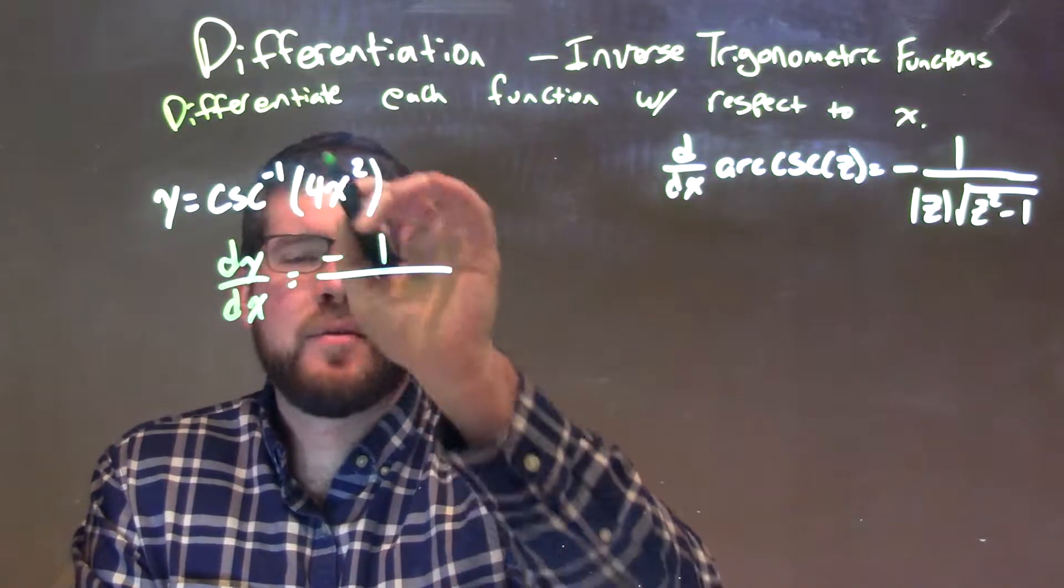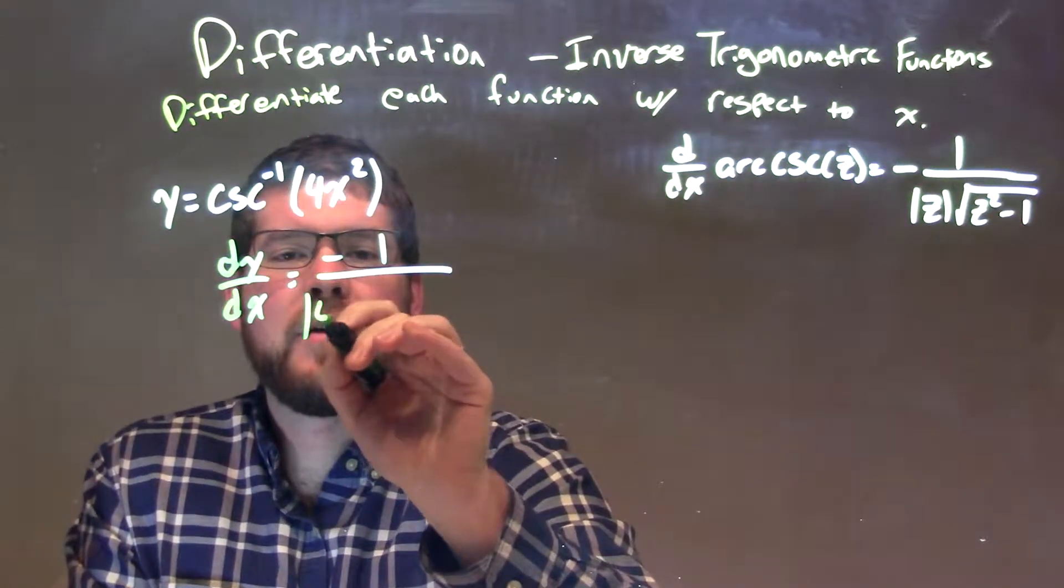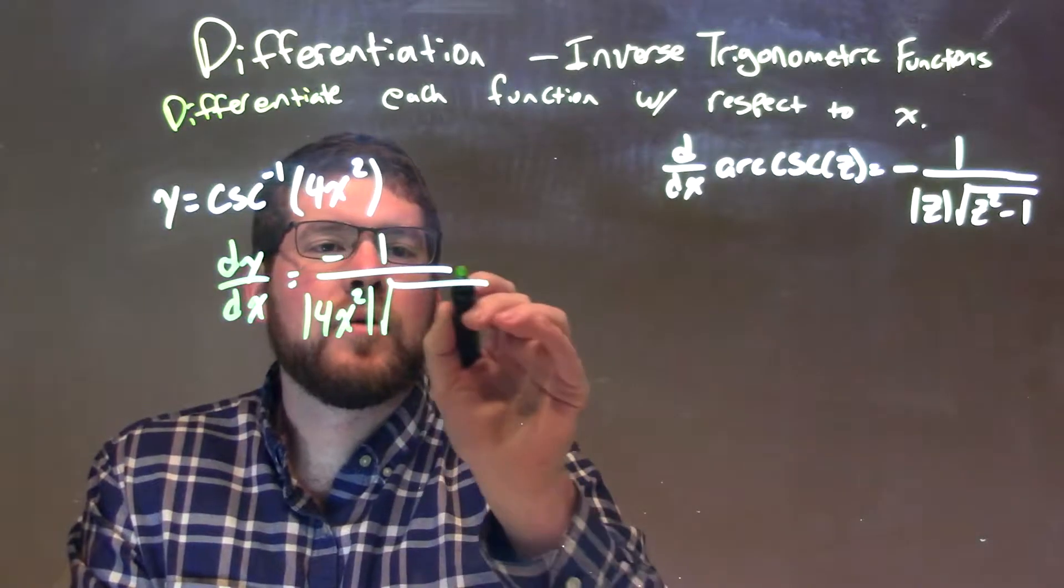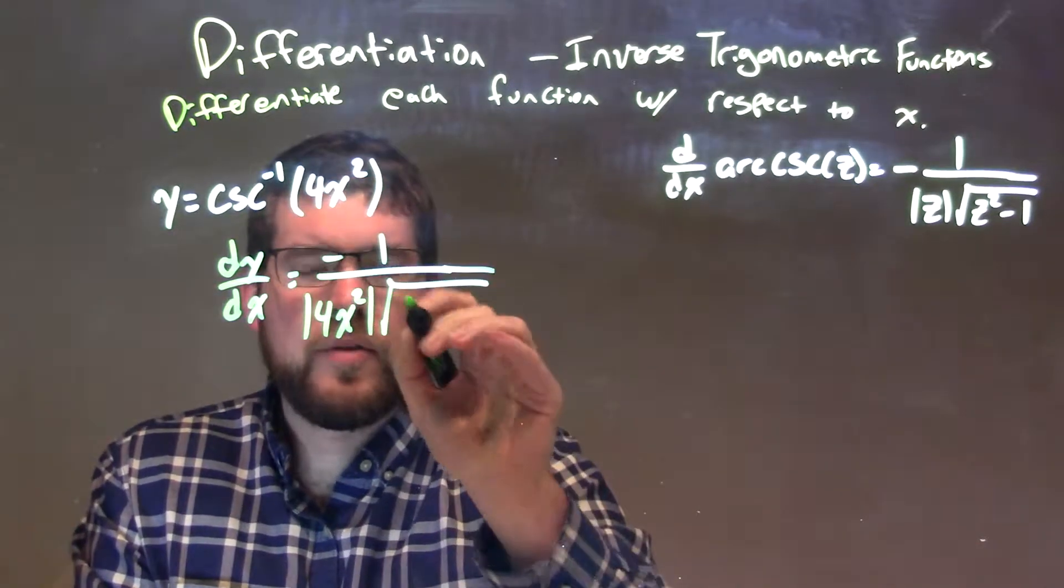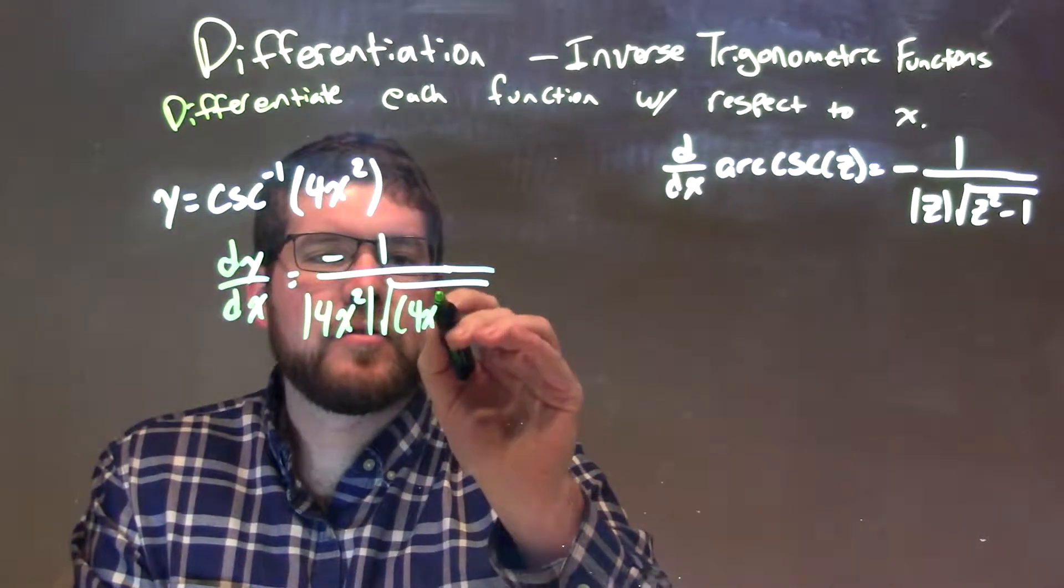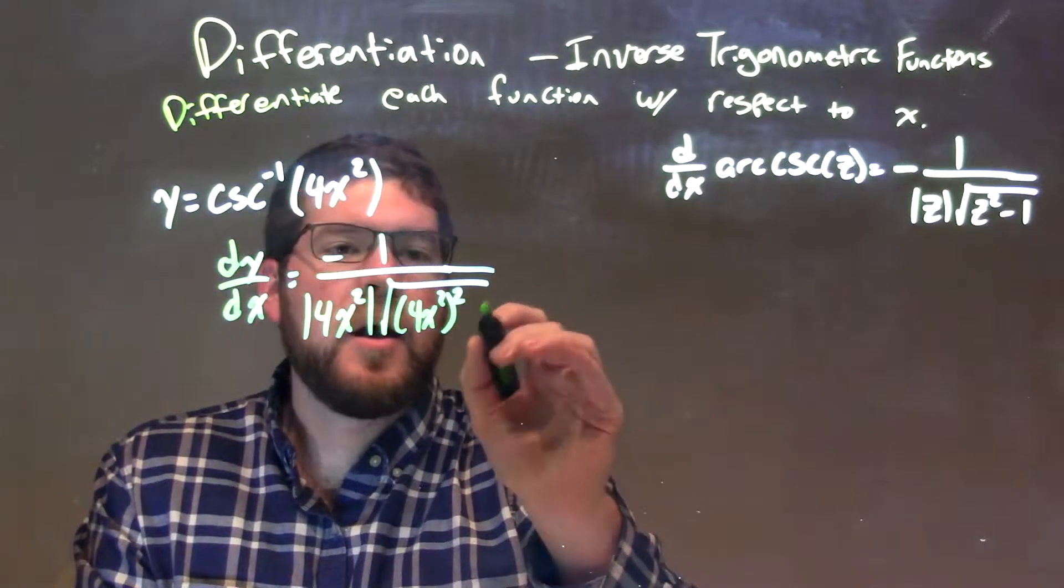In this case z is what's in my parenthesis, so the absolute value of 4x squared times the square root of our parenthesis, 4x squared, all squared, minus 1.